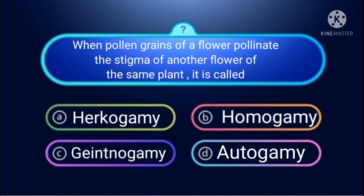Autogamy means transfer of pollen grain from anther to stigma in the same flower and same plant. In this case, transfer happens on the same plant but to a different flower — this is called geitonogamy. The right answer is geitonogamy. It is a type of self-pollination in which only one parent is involved.